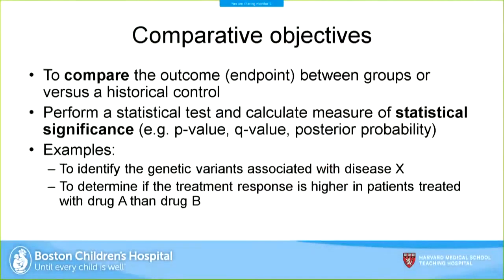For comparative objectives, the goal is to compare a certain outcome or endpoint between groups, or compare your measured outcome versus some historical control or threshold. In this case you would perform a statistical test and calculate a measure of statistical significance — such as a p-value, q-value, or posterior probability. Examples include: identifying the genetic variants associated with disease X, or determining if the treatment response is higher in patients treated with drug A versus drug B.